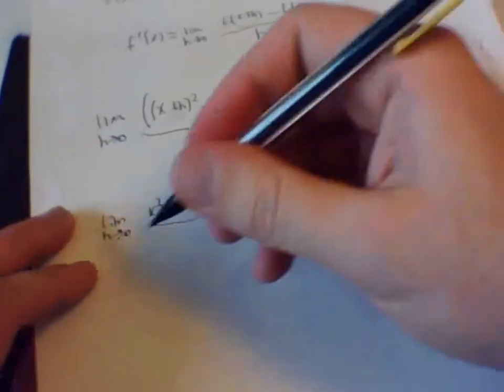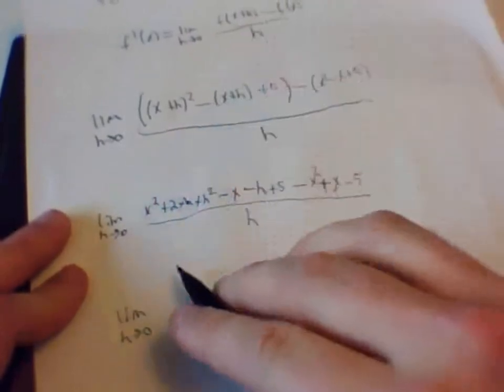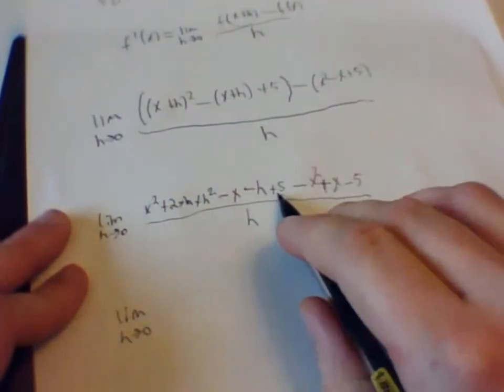Now we are going to cancel some of these out. So we are going to write this down here. It goes to zero. And we are going to see, let's see, the fives.